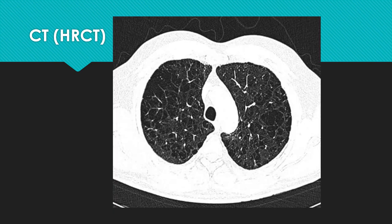On CT — which isn't routine for diagnosis but is done when looking for alternative diagnoses, complications, or lung cancer screening — you can differentiate between centriacinar, panacinar, or paraseptal emphysema, and look for changes such as bullae formations, scar tissue, and honeycombing.